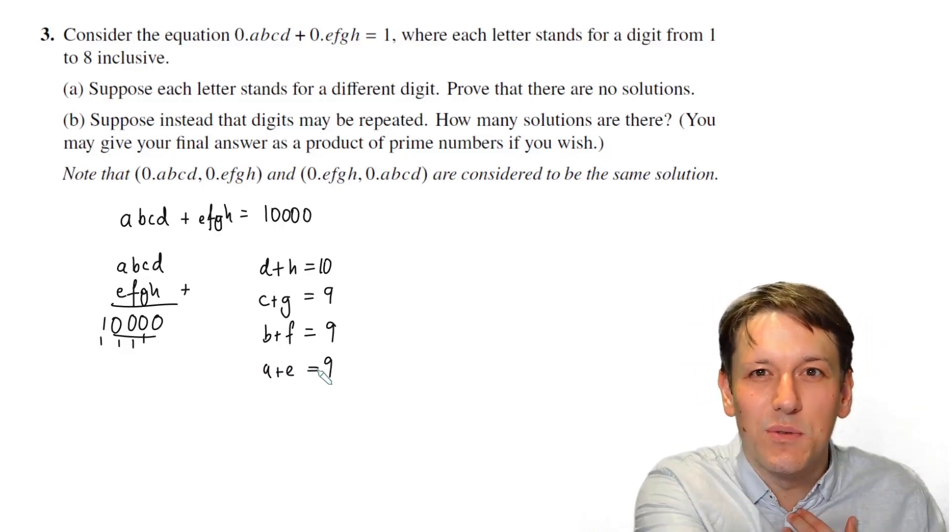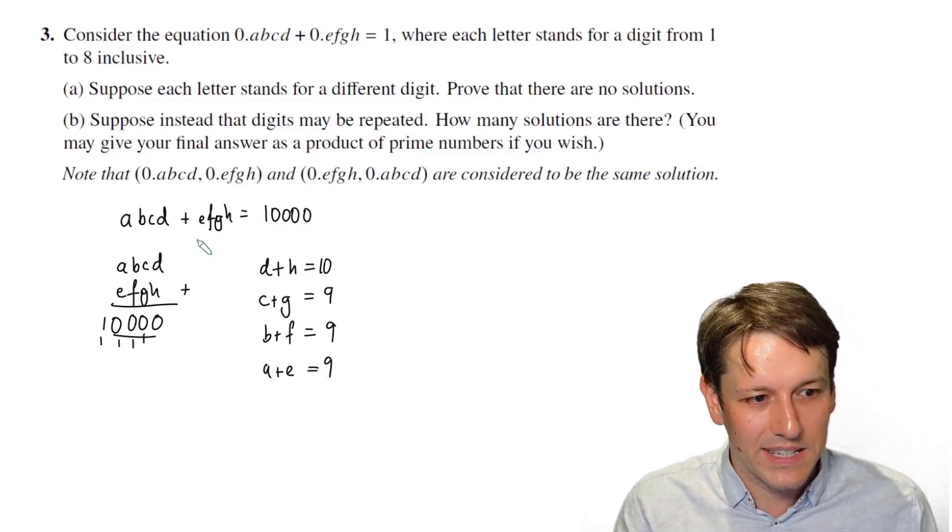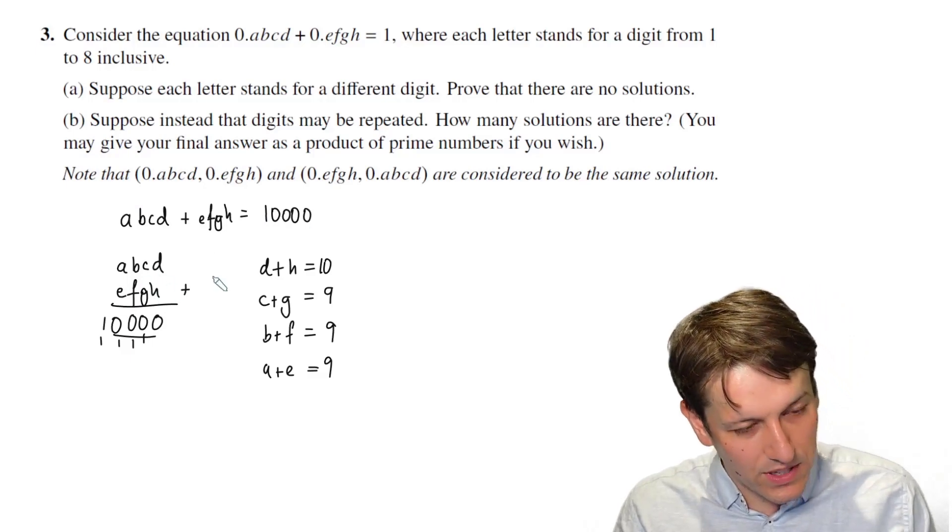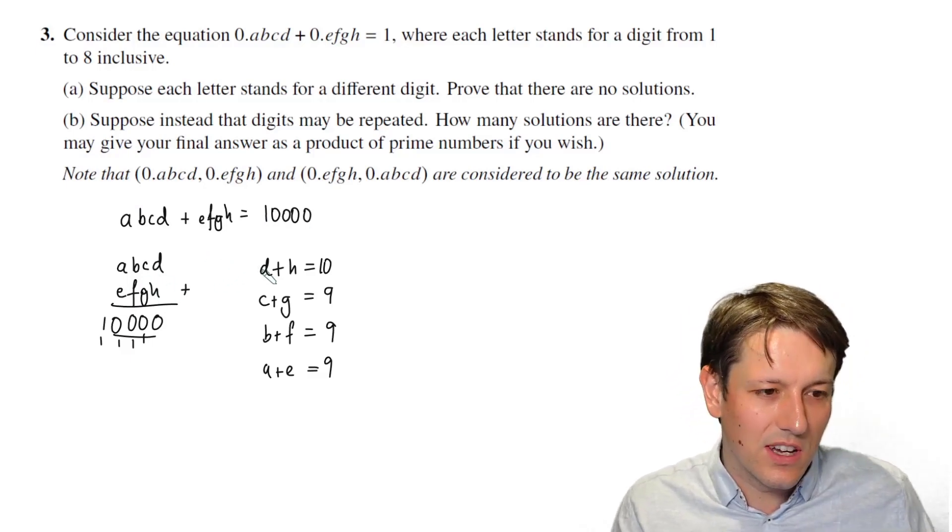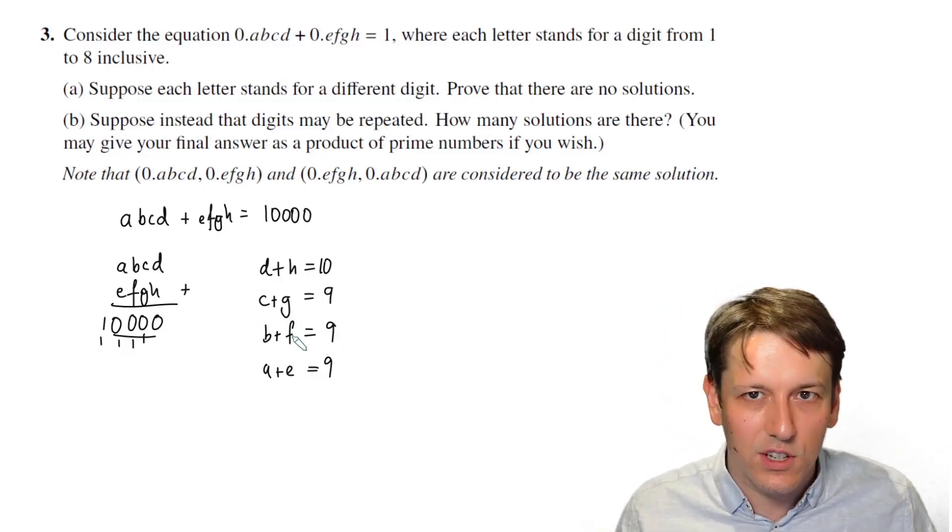So I have these four equations. Now, you need to write a few more words in your answers for a full solution here. I'd say multiply both sides by 10,000. And just say, as we do the sum, we see D plus H is 10. Because we carry a 1, C plus G is equal to 9, and so on.